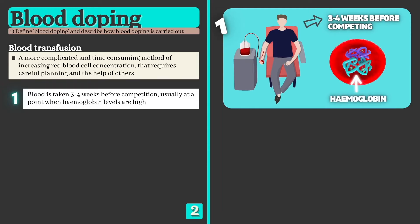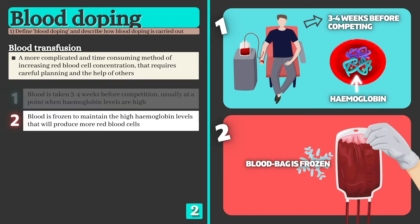Remember, hemoglobin is the molecule found in red blood cells responsible for transporting oxygen. Step 2: The blood is frozen to maintain these high hemoglobin levels and prevent the cells from dying.